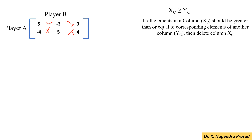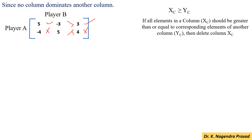Then, compare the 3rd column elements with the 2nd column. So, 3 is greater than minus 3, but 4 is not greater than 5. So, the condition is not satisfied. So here, no column dominates another column.